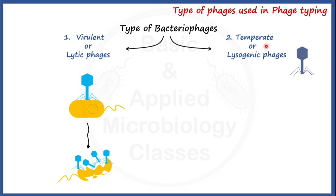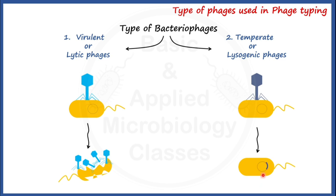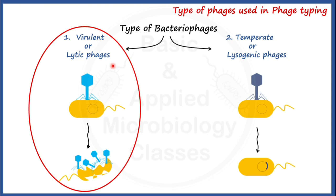Temperate or lysogenic phages, when they come in contact with a bacterial cell, have their genome integrated inside the bacterial chromosome. Rarely does this integrated genome get separated from the bacterial chromosome to pursue the lytic cycle. We are not going into detail about the lytic and lysogenic replication cycles here. The answer to which phages are used in phage typing is: virulent or lytic phages are used in bacteriophage typing.